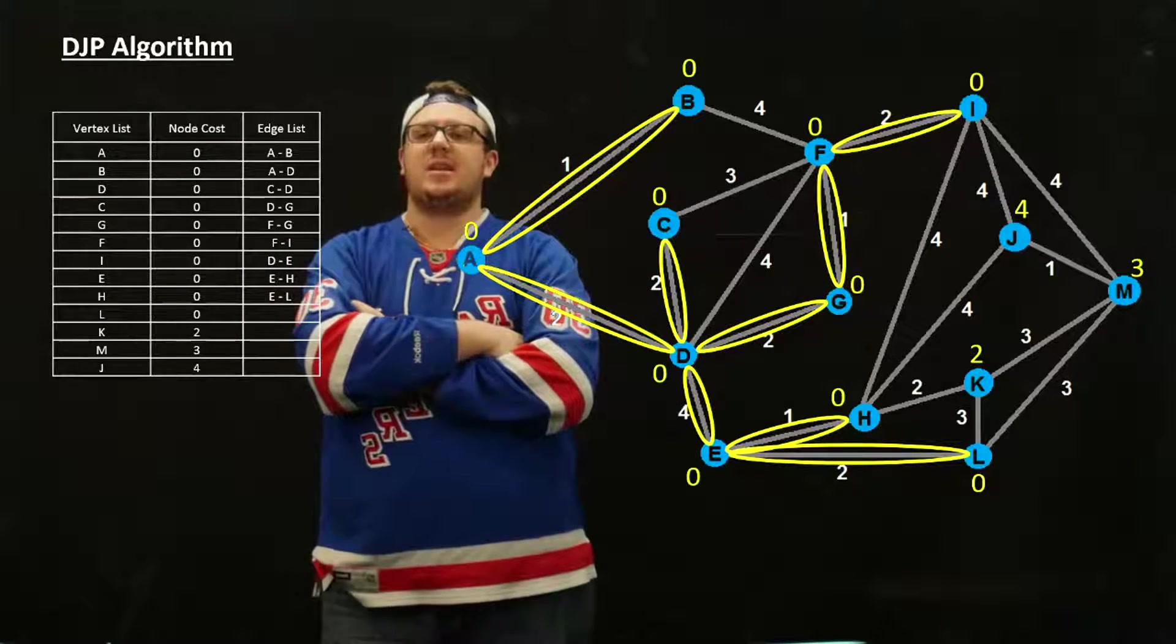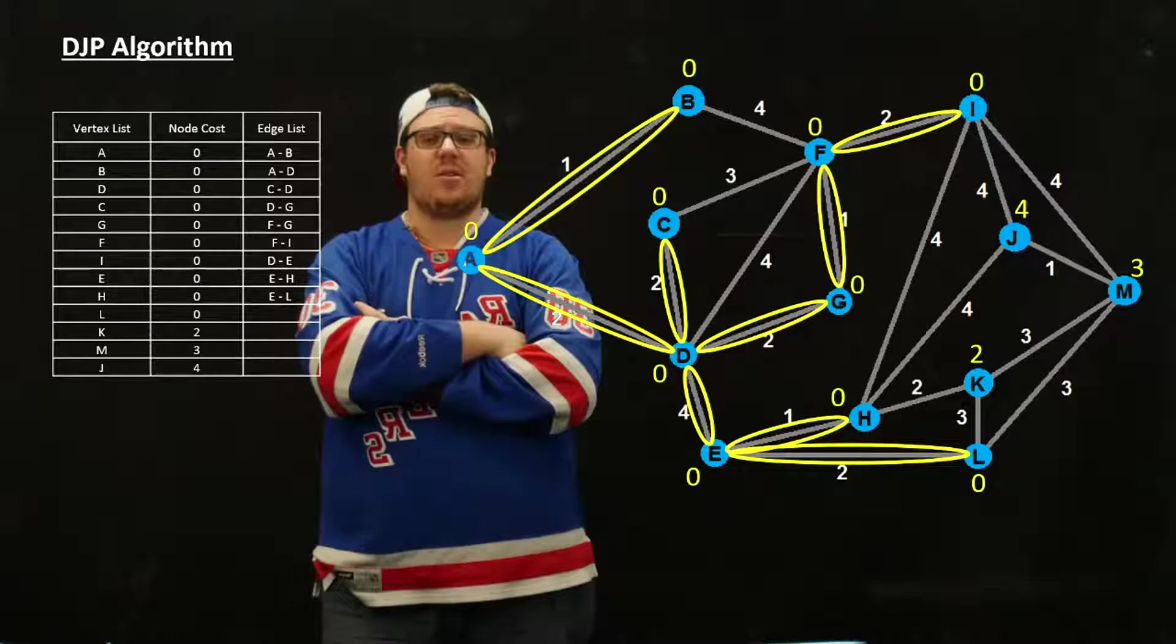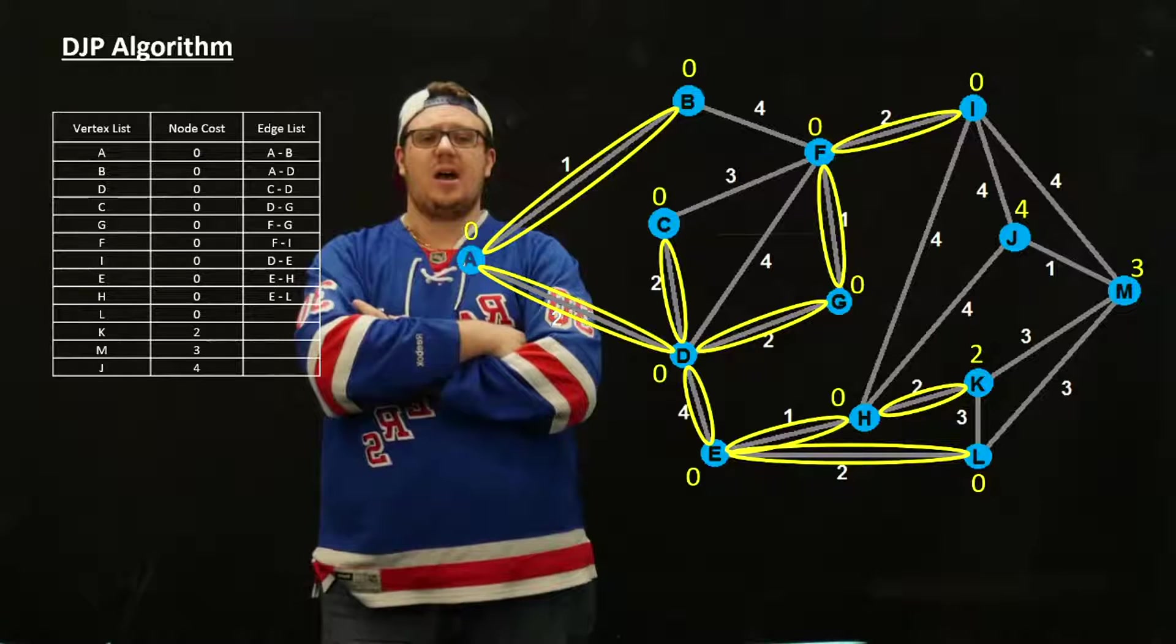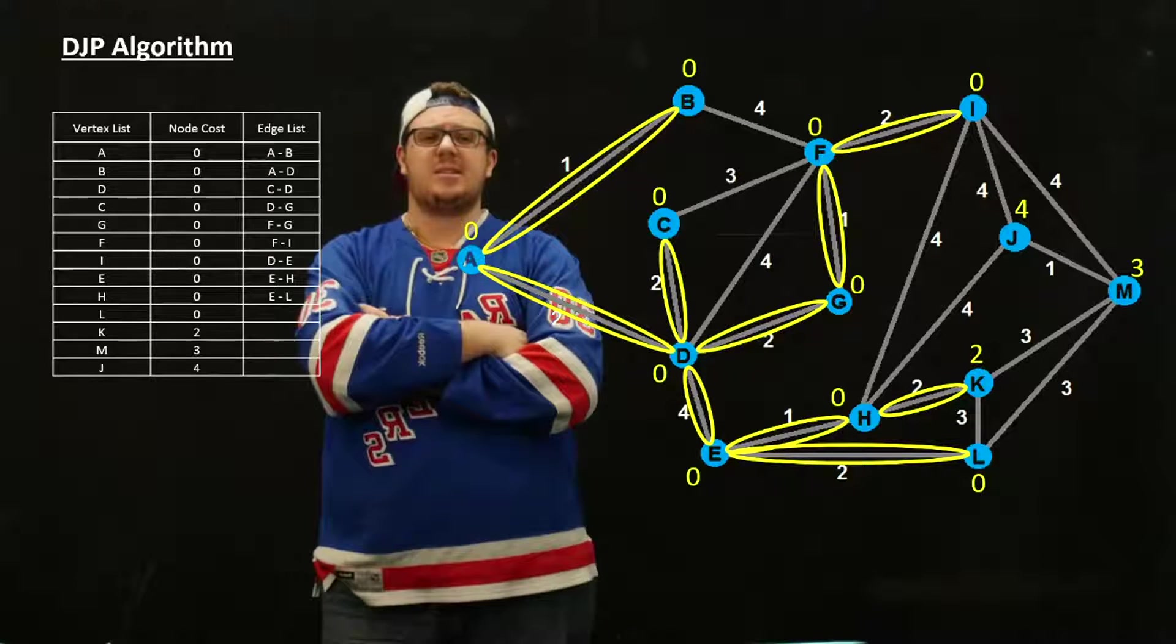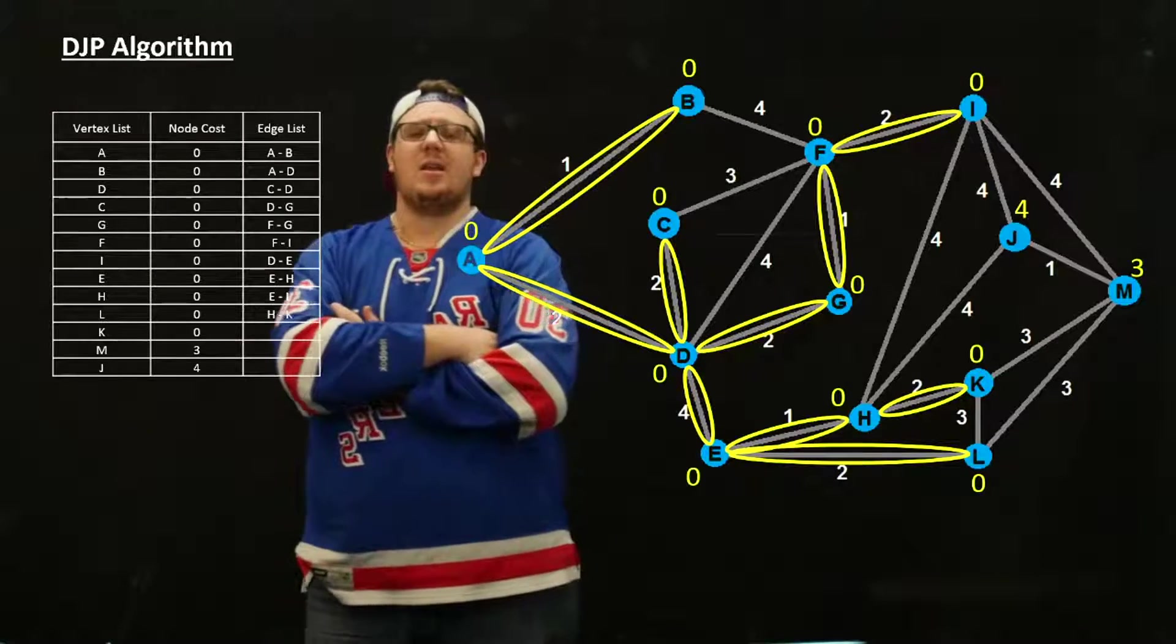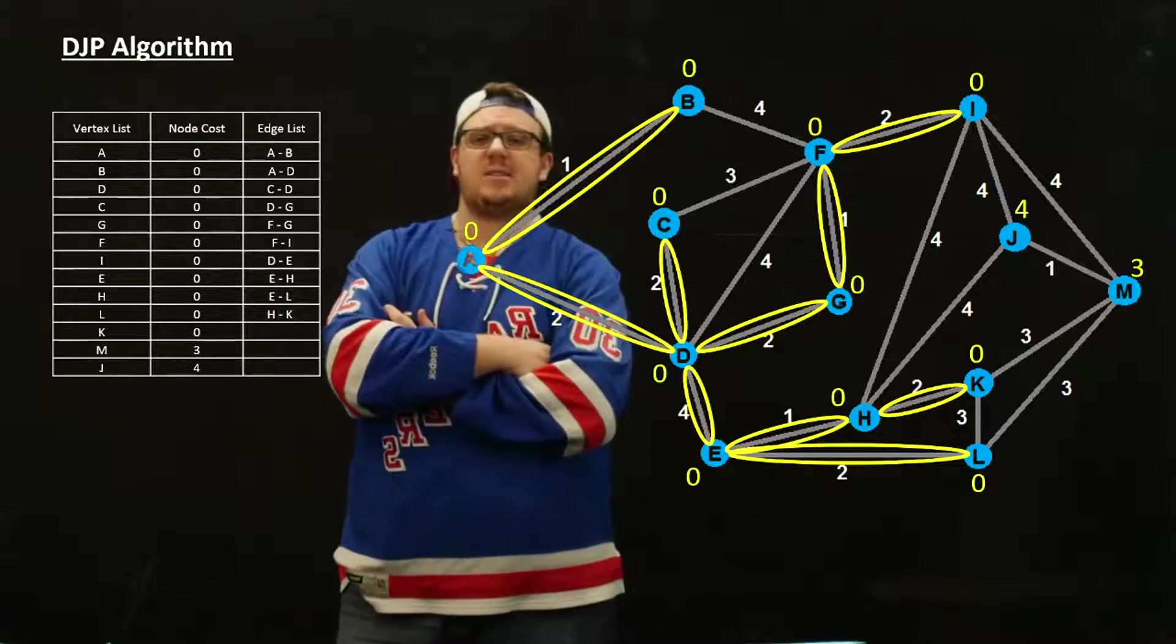The next smallest thing is indeed K because we don't update it. That has a weight of 2, so we add it to the tree, update that to zero, and update what needs to be. But in this case, nothing needs to be updated other than to make K zero.